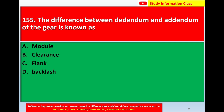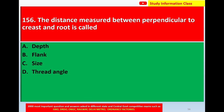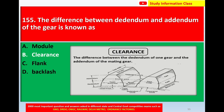Question number 155: The difference between the dedendum and addendum of a gear is known as — option A: module; option B: clearance; option C: flank; option D: backlash. The correct answer is option C: clearance. Clearance is defined as the difference between the dedendum of one gear and the addendum of the mating gear.